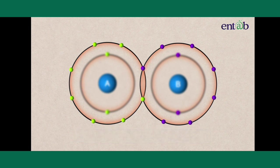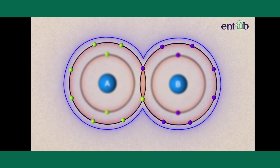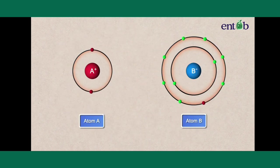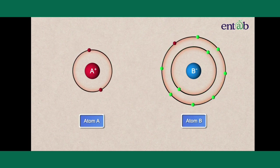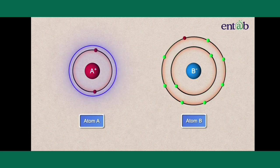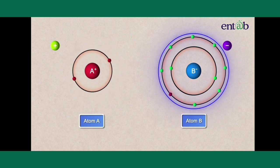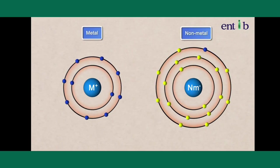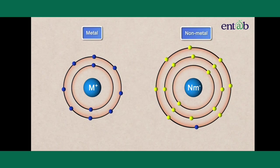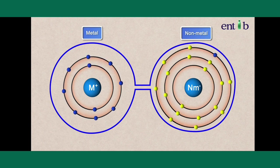Since the electrons are shared between the atoms in a covalent bond, both the atoms are neutral. Whereas we have seen that in an ionic bond, one atom develops a positive charge, while the other develops a negative charge.